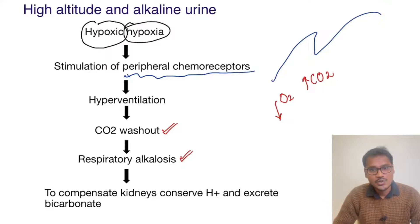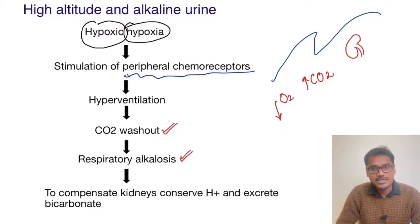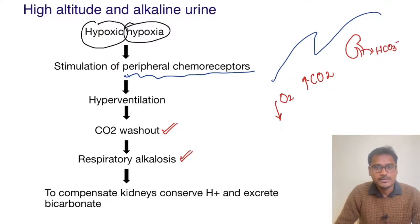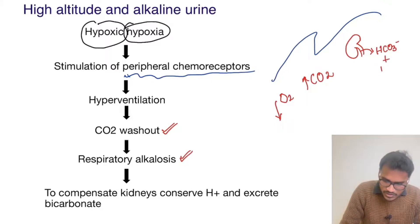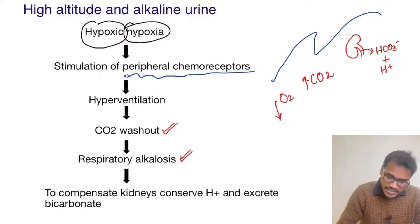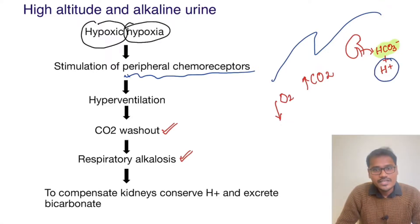Whenever there is respiratory alkalosis, our kidneys come to the rescue. The kidneys sense this alkalinity in the body. What they do is they start throwing out bicarbonate out of the body, and at the same time they also conserve H+. The reason for urine alkalinity is the bicarbonate excretion in response to the respiratory alkalosis.